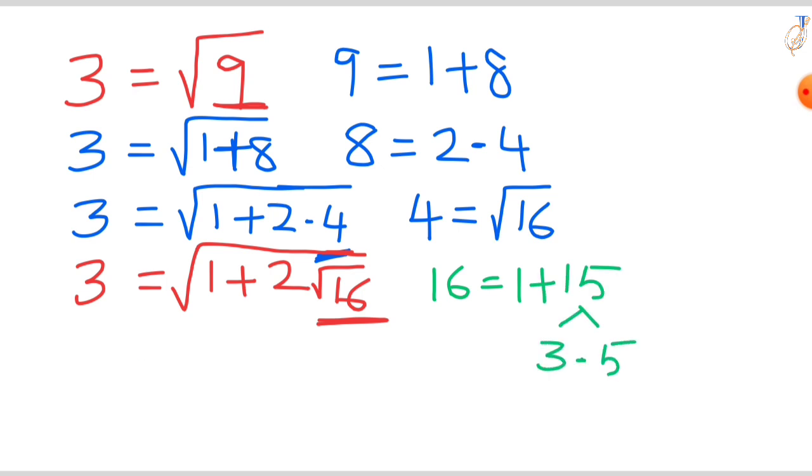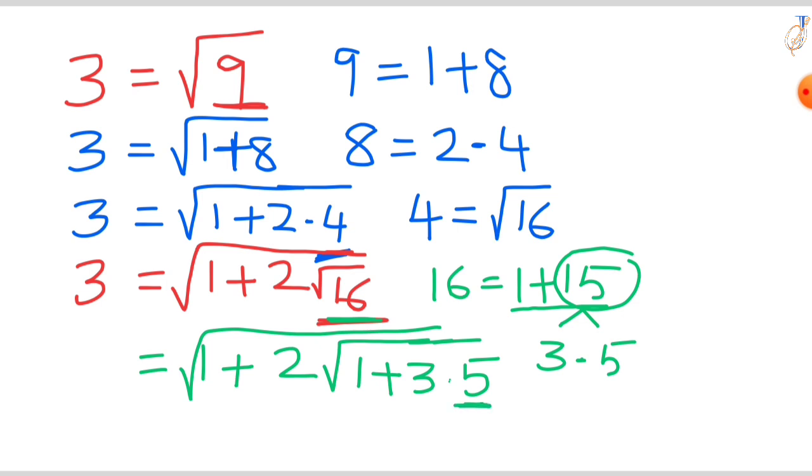So this form we can write as 1 plus 2 root 16, which is 1 plus 15. This 15 we can write as 3 times 5, and this 5 we can write as a perfect square, that is square root of 25.